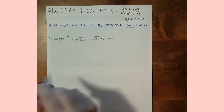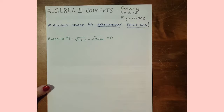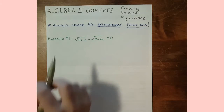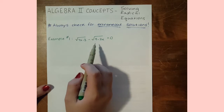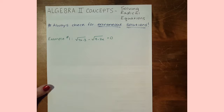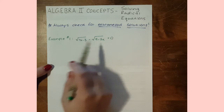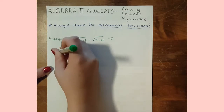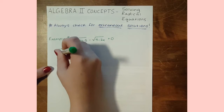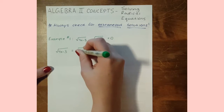For this first example we have the square root of 4x minus 3 minus the square root of 9 minus 2x equals 0. The first step I'm going to take is to add the square root of 9 minus 2x to both sides so that we have one radical on each side. We'll end up with the square root of 4x minus 3 equals the square root of 9 minus 2x.